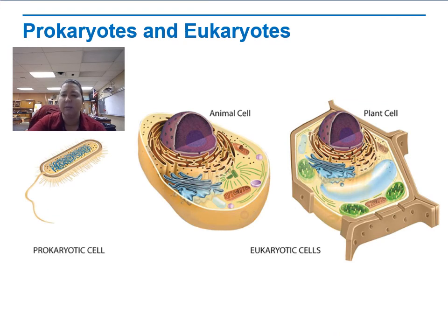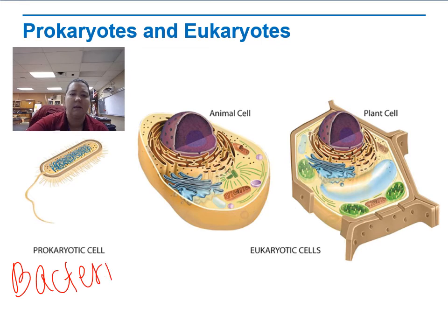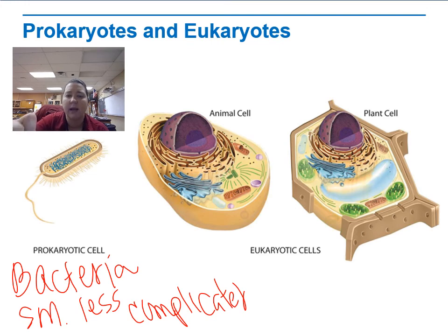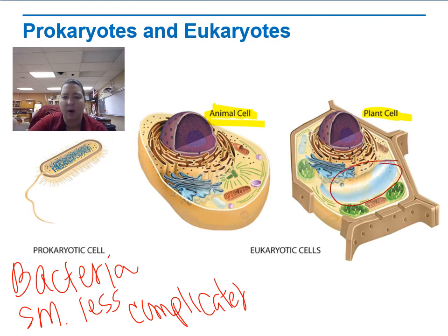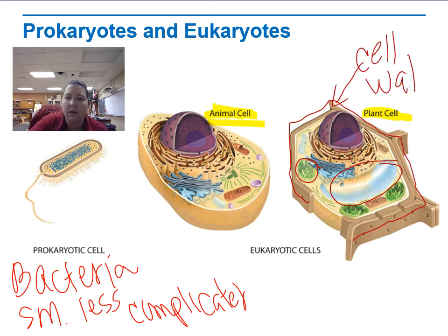Prokaryotes and eukaryotes — we'll talk more about these and you'll get to see them under the microscope. Prokaryotic cells, like bacteria, are smaller and less complicated. Eukaryotic cells include both animal cells and plant cells. If you look at them, they're very similar — just a few differences. The central vacuole is one: it's a big storage compartment. Chloroplasts and the cell wall on the outside are others. But overall, animal cells and plant cells are actually very similar — that's why you share about 50% of your genes with a banana.